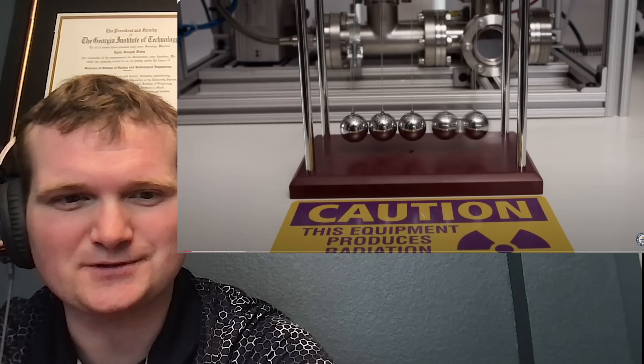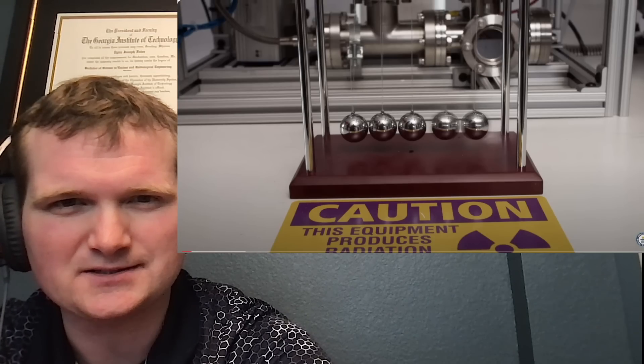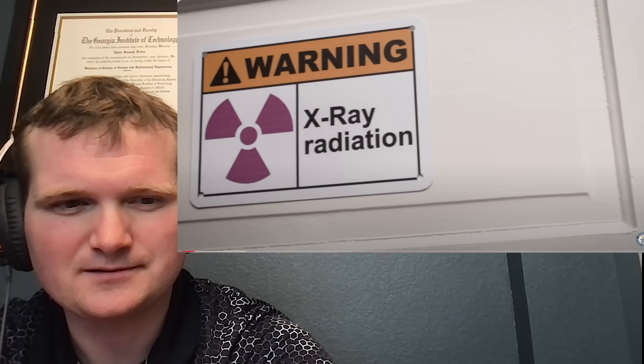This equipment produces radiation when energy. That's a good safety label, it's the standard yellow and magenta. Building a fuser is a very dangerous process, mostly because of the high electricity.